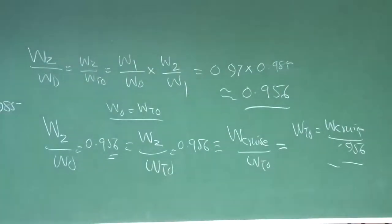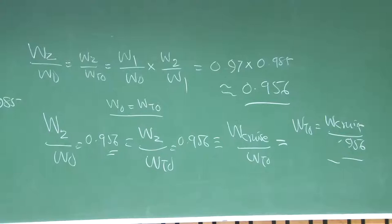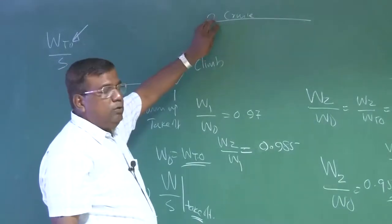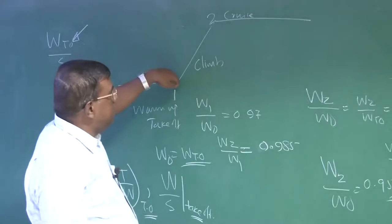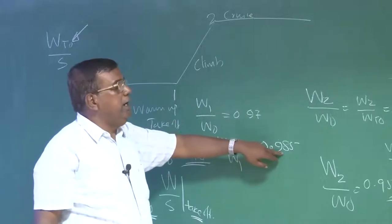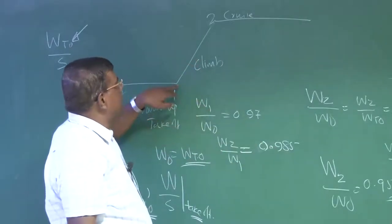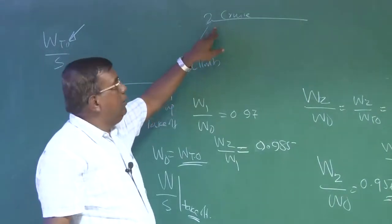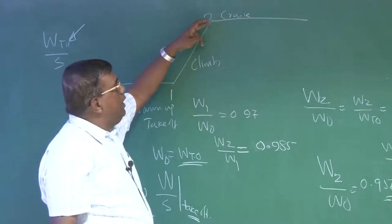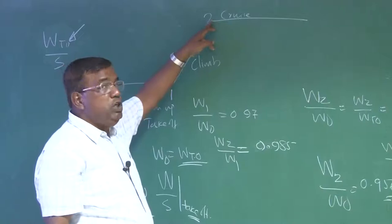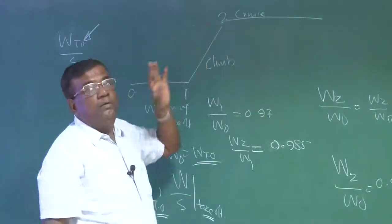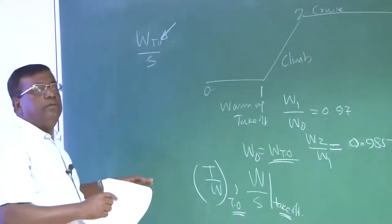This is a common mistake we make in class, and this is not just a numerical mistake — that is why I am stressing it. When you are designing an airplane, these points will tell you at the start of cruise, it is expected to have W2 by W1 = 0.985. That means 1 minus 0.985 of whatever weight the airplane had — that much fuel was burned. If you really want W to be a certain value from any requirement, you must ensure W takeoff is sufficient so that after this operation, W cruise is what you are aiming for. That is why all data should be converted to takeoff conditions.